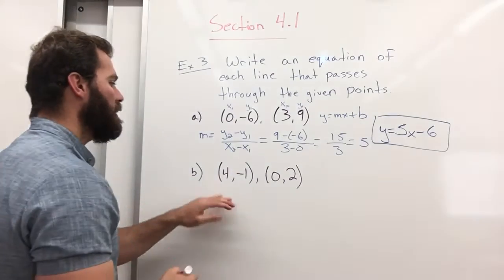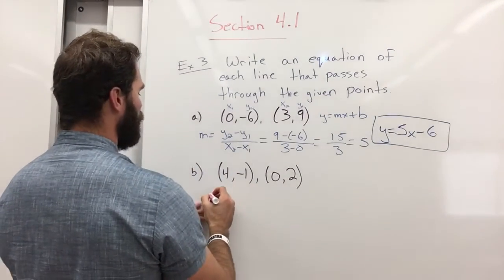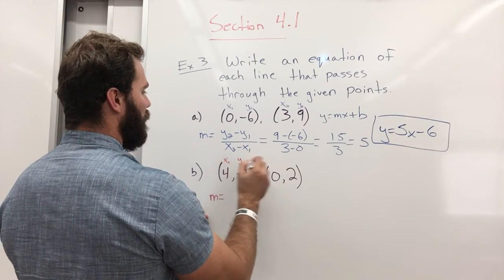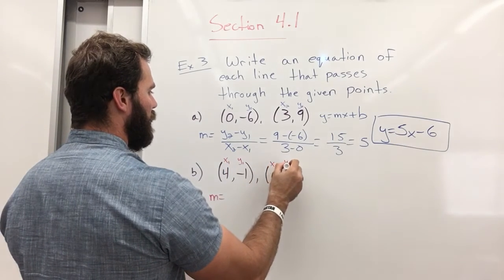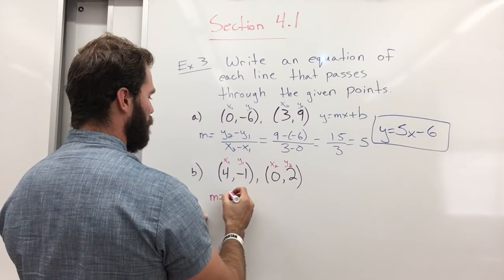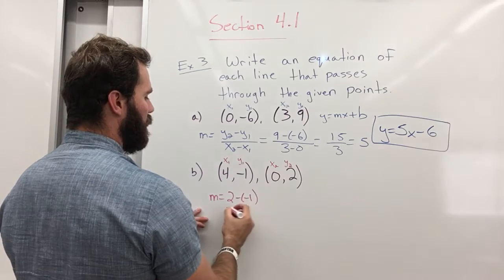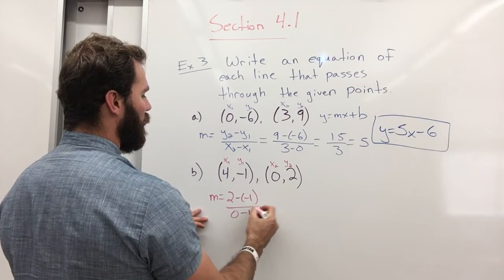And part b, same thing. We're going to do the same thing. So I'm going to label these again. If you need to, you do it. If you don't, don't do it. So 2 minus a negative 1, over 0 minus 4.